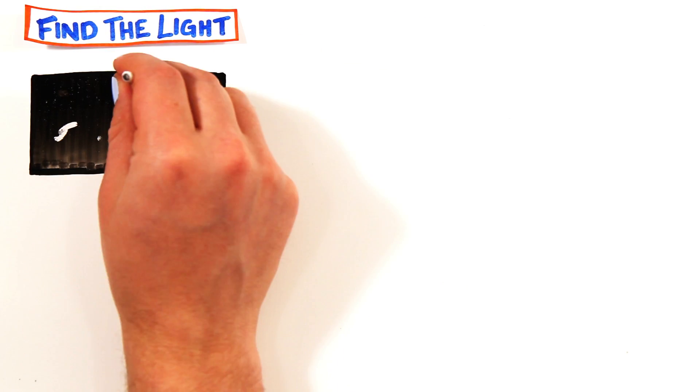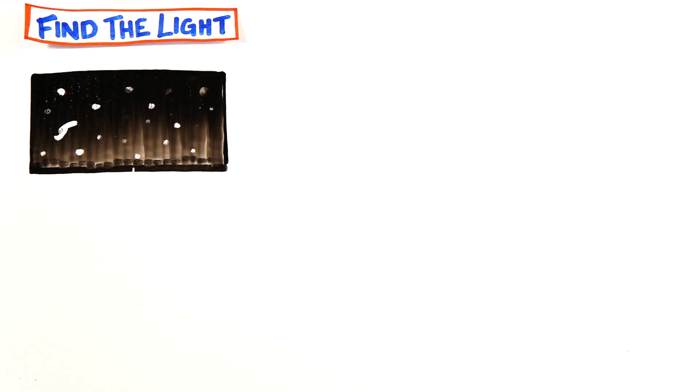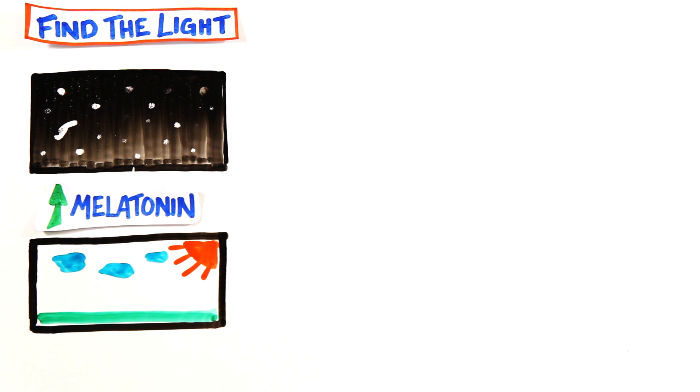Number one, find the light. Melatonin is a hormone secreted by the brain and is critical in regulating your sleep. When it's dark, your body produces more melatonin, making you sleepy, and when it's light, the production of melatonin drops.